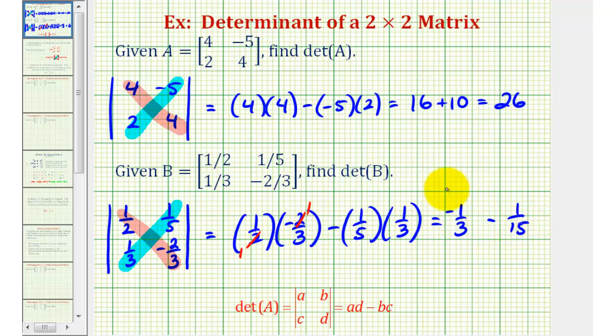Which would give us negative five-fifteenths minus one-fifteenth, which would be negative six-fifteenths. But six and fifteen share a common factor of three. We can divide these both by three. So the determinant of matrix B is equal to negative two-fifths.